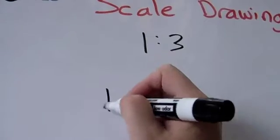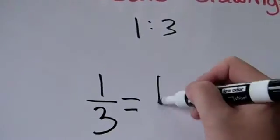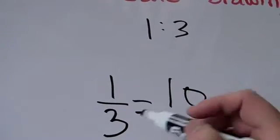The ratio 1 to 3 can be used to set a proportion to find the missing variable x. 1 over 3 is equal to 10 over x.